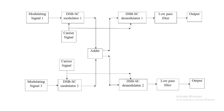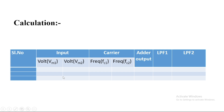Finally we get the output matching whatever we sent at the input. This is the circuit diagram for frequency division multiplexing and demultiplexing. In the calculation table, we note the values of modulating signal one (Vm1) and modulating signal two (Vm2), then the two different carrier frequencies. We also draw the output waveform of the adder, and the output waveforms of LPF1 and LPF2 — the two low pass filters.